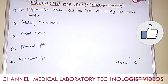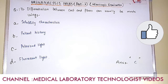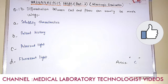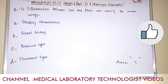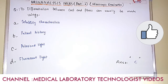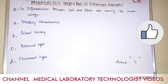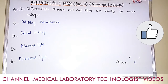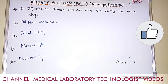Question number 17. Differentiation between cast and fiber can usually be made by using. Option A: solubility characteristics. Option B: patient history. Option C: polarized light. Option D: fluorescent light. The answer is option C, polarized light. Differentiation between cast and fibers can usually be made by using polarized light.